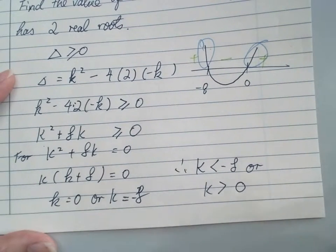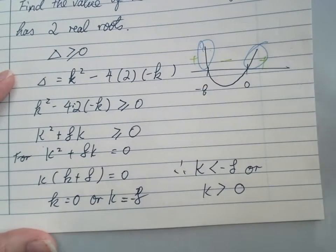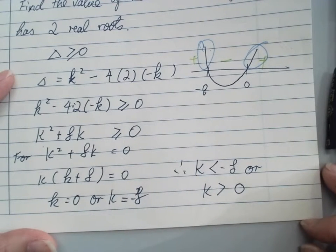And this is the most annoying bit. Sign diagram, sketch the curve, anything should be working. Alright? So that's it for the discriminant and how to apply it.